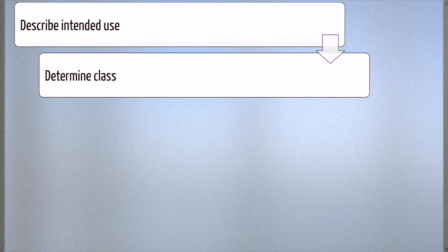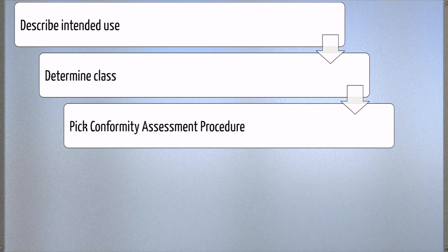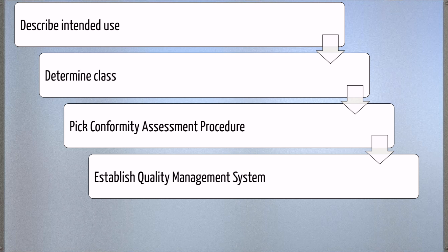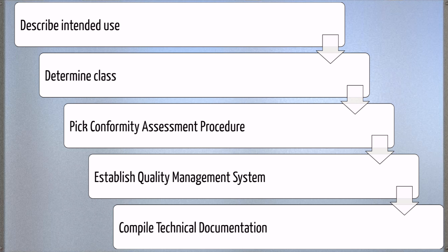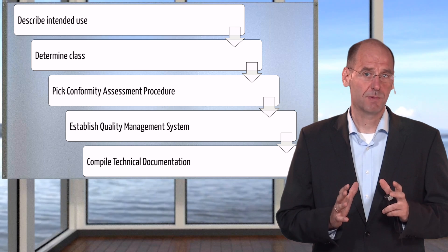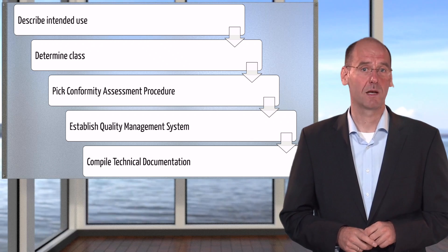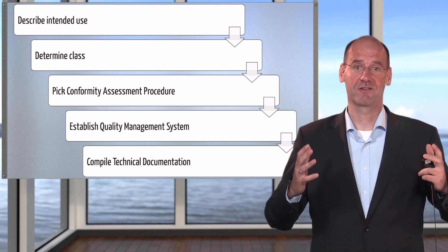The typical steps to market your medical device in Europe are the following. First, describe the medical purpose and intended use of your device. Second, based on this, determine the class of your device. Third, pick a conformity assessment procedure that suits this class. Fourth, if the class is not class 1, establish a quality management system and have a notified body auditing and certifying it. Then, regardless of the class, compile the technical documentation compliant with the respective harmonized standards or common specifications. You also need a post-market surveillance and vigilance system.